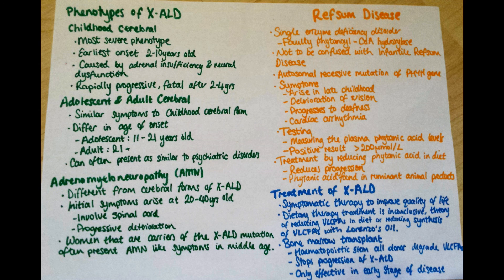Refsum's disease is a single peroxisomal enzyme disorder caused by a faulty phytanoyl-CoA hydroxylase enzyme. It should not be confused with infantile Refsum disease, which is a peroxisomal biogenesis disease. The disease is caused by an autosomal recessive mutation in the PHYH gene, or in some cases the PEX7 gene. Symptoms usually present in late childhood and include deterioration of night vision and progressive retinitis pigmentosa, progressing to deafness, polyneuropathy, and cardiac arrhythmias. Testing involves measuring the concentration of phytanic acid in plasma, and a positive result is a concentration above 200 micromoles per litre. Unlike many other peroxisomal diseases, changing the diet to reduce phytanic acid is used as a therapy. Phytanic acid is usually formed from chlorophyll metabolism, so restriction of meat and dairy from ruminant animals such as cows reduces plasma phytanic acid levels.